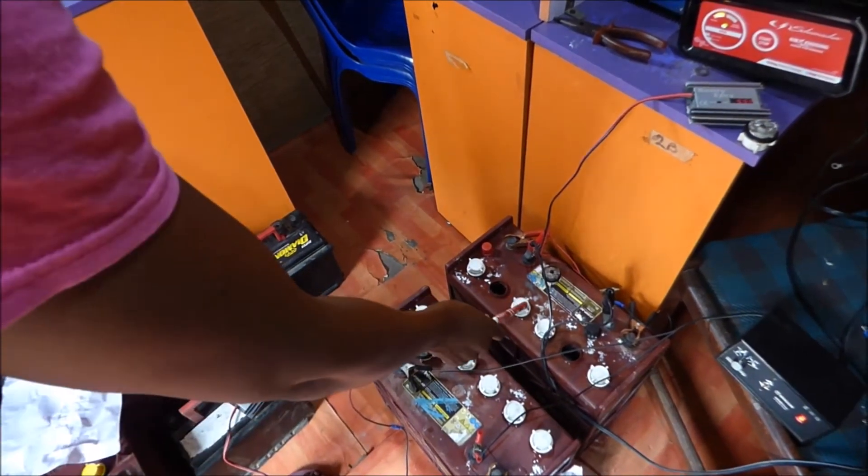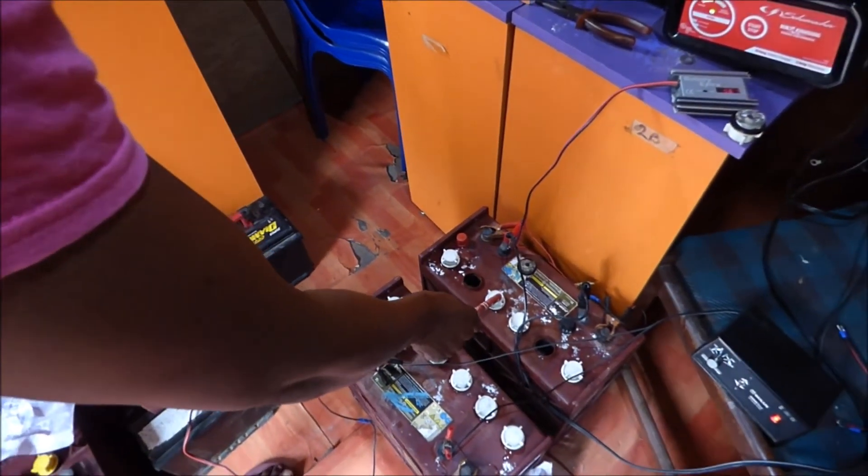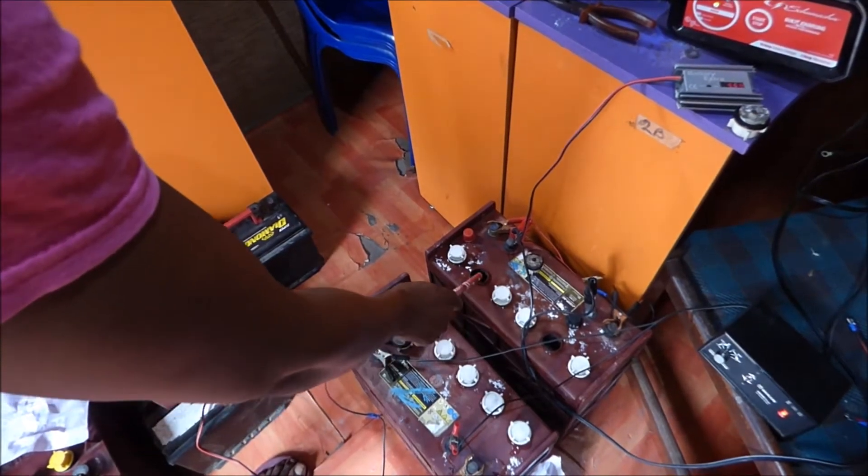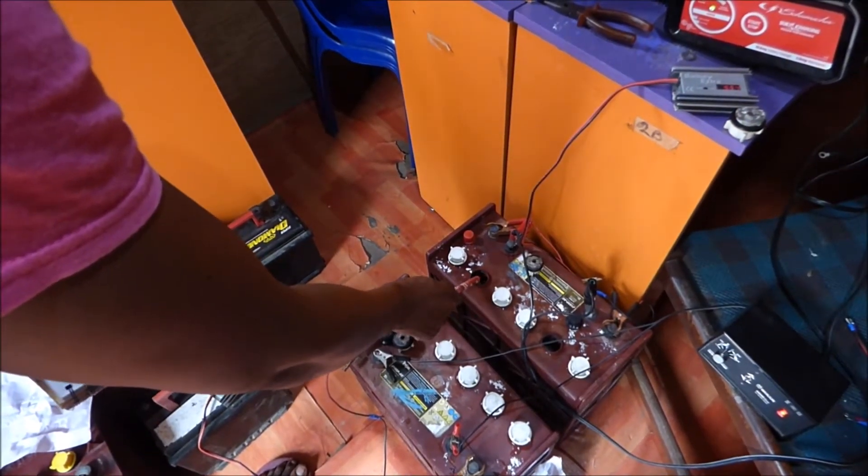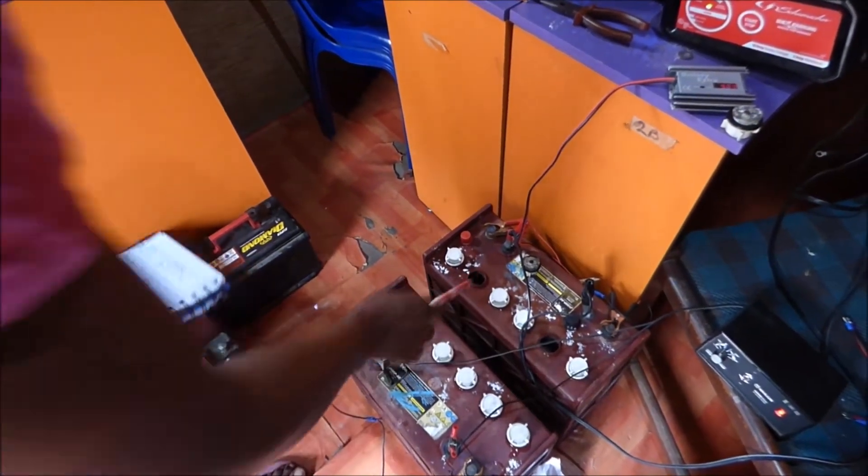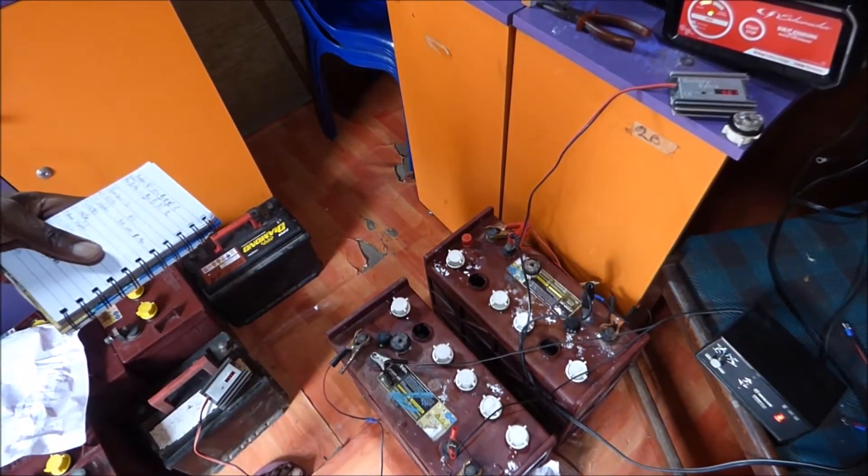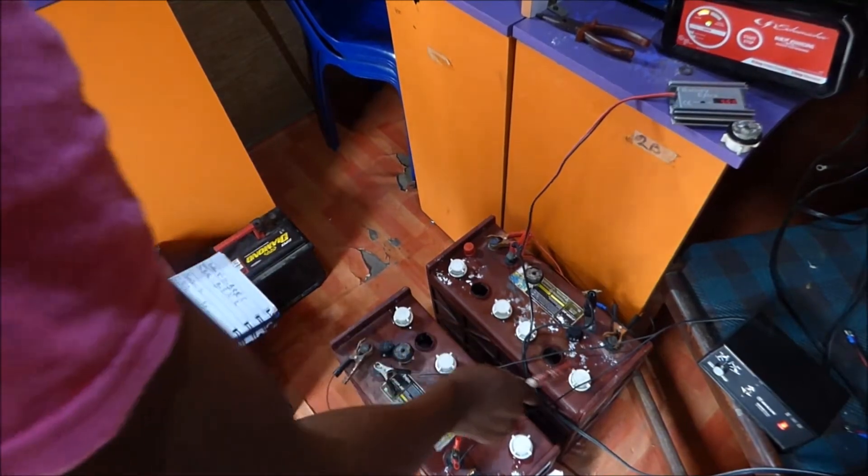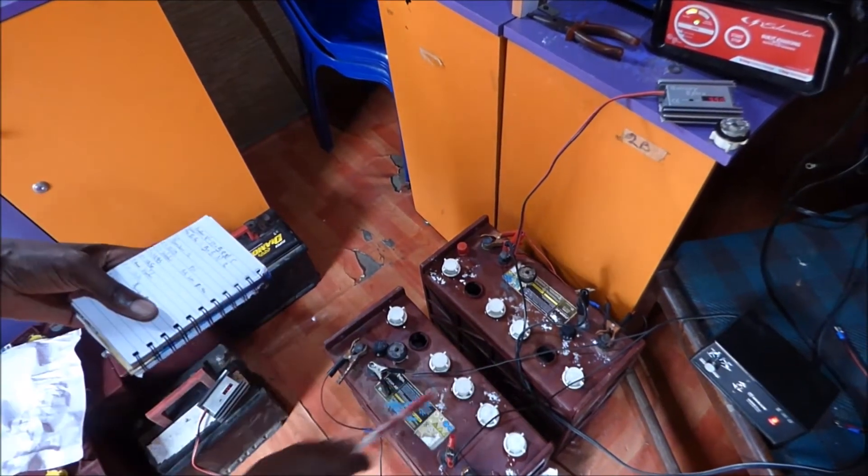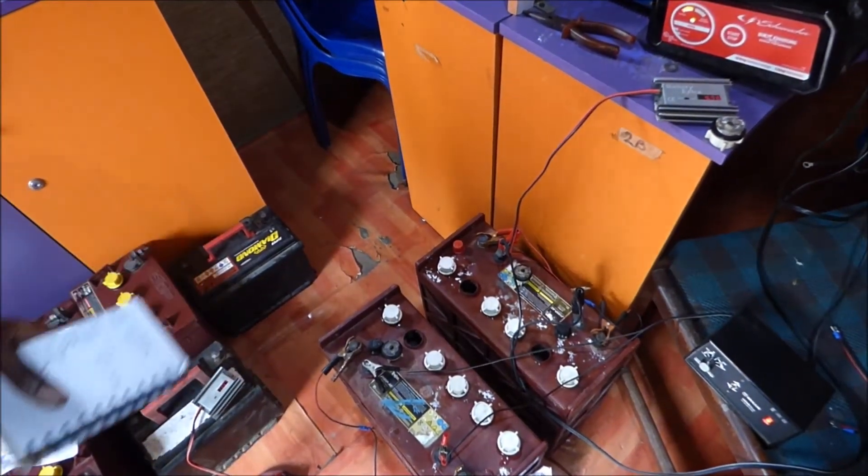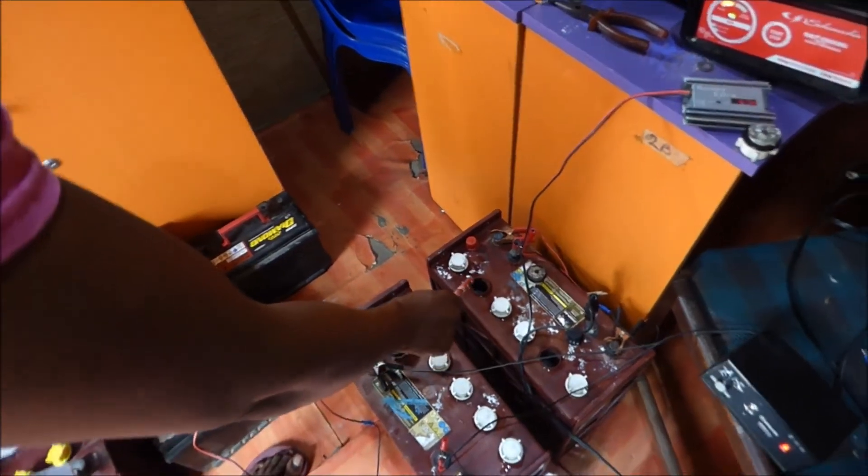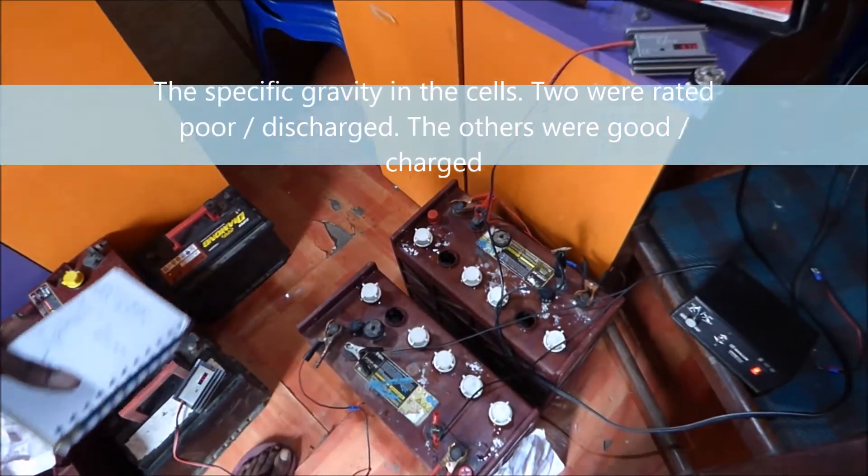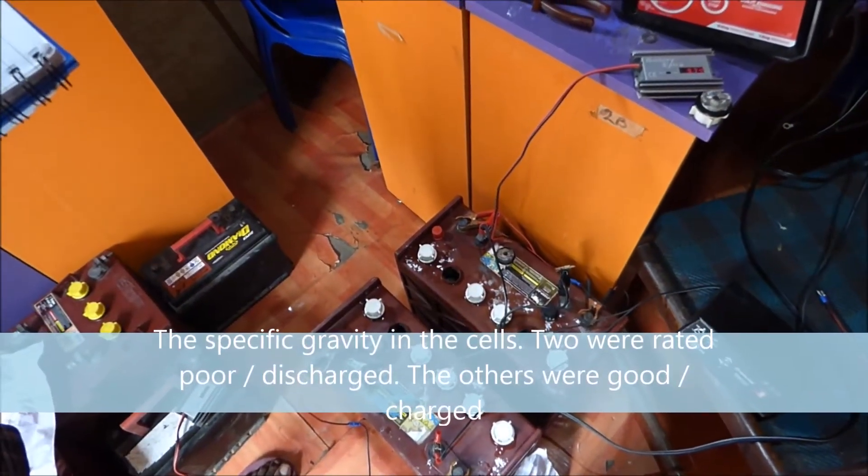This is the first one. This battery was reading 5.5 volts. These two cells had water in them while the others were fully charged. The fully charged cells were 1275 on the hydrometer and these two were in really bad shape. Our battery voltage was about 5.5 volts.